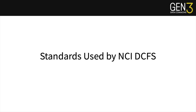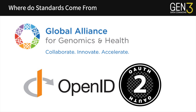Now that you know what the general architecture looks like, I'll dive a little bit deeper into the standards that we follow within NCI DCFS and within the Gen3 implementation of framework services to allow for interoperability. There are two key global standards that we will talk about today: standards being worked on by the Global Alliance for Genomics and Health, also known as GA4GH, as well as the general internet protocols that are standard across the board for OpenID Connect and OAuth 2.0, both of which are standards used in authentication and authorization.